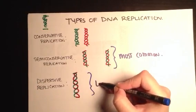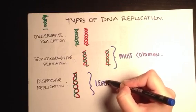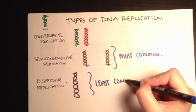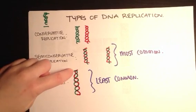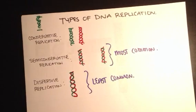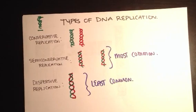In dispersive, it's the least common type of replication that you will observe in a cell. And so the difference, the main difference to remember is that one strand, you can see, contains both old and new DNA.